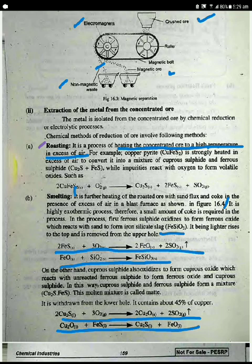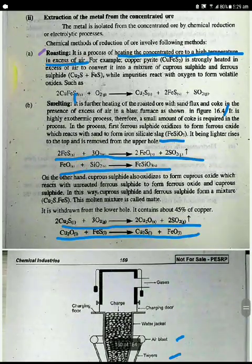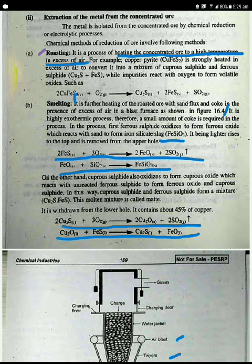Sulfur dioxide will escape from the furnace and there are two substances which remain in the furnace are copper sulfide and iron sulfide. Now we will put into the furnace to the next furnace. This process of smelting.